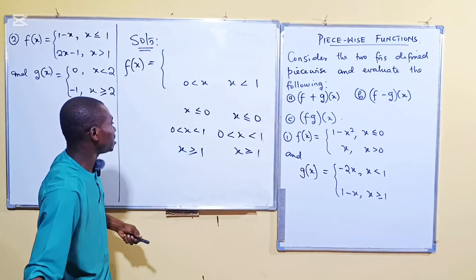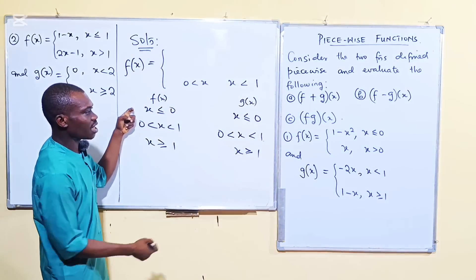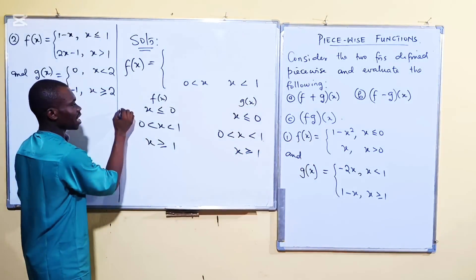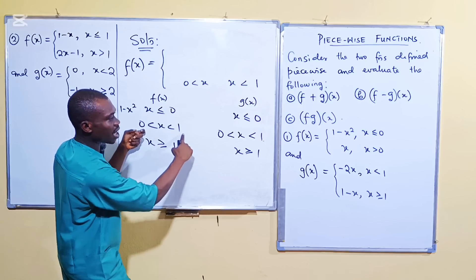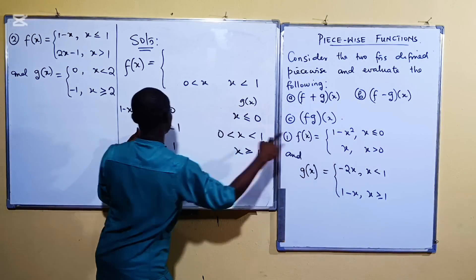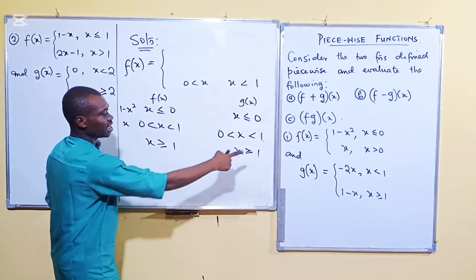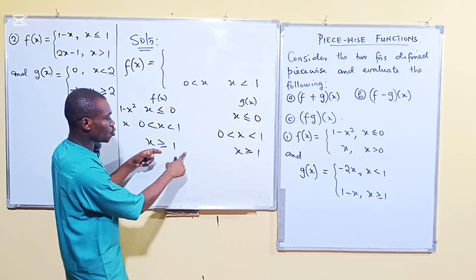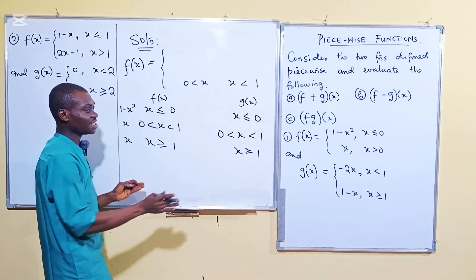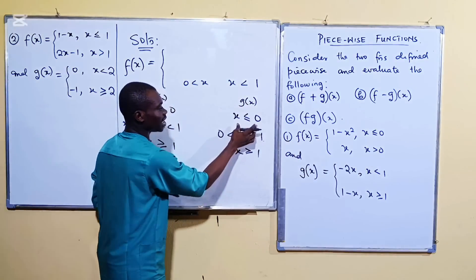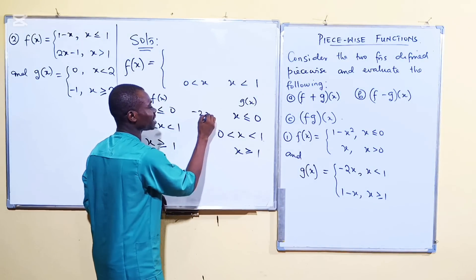Now let's determine which function expression applies in each interval. For f: when x ≤ 0, f uses 1 - x²; when 0 < x < 1, anything greater than 0 still satisfies x > 0, so f uses x; when x ≥ 1, anything ≥ 1 is still > 0, so f is still x. For g: when x ≤ 0, that's also less than 1, so g uses -2x; when 0 < x < 1, that's still less than 1 (e.g., 0.5 is less than 1), so g is still -2x.